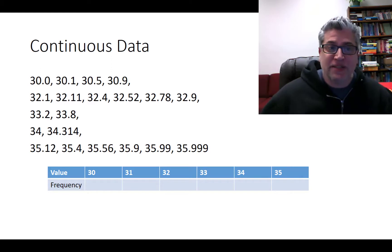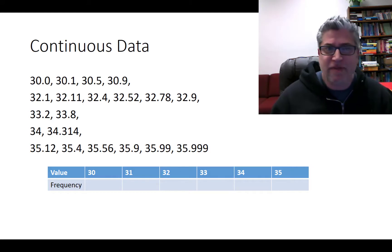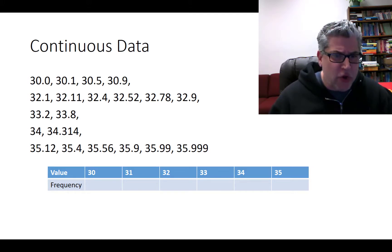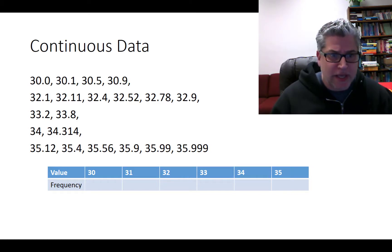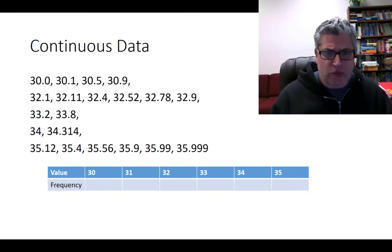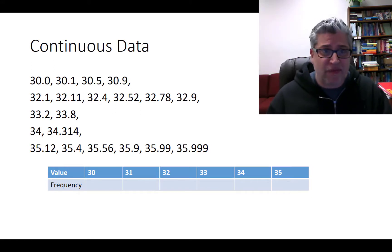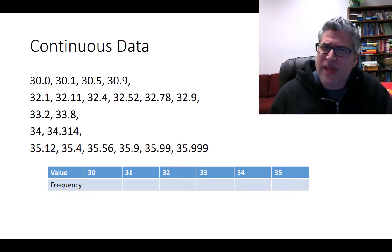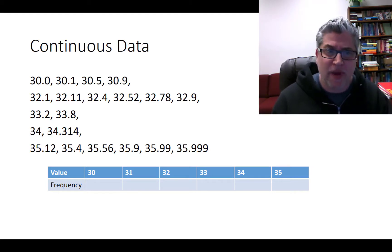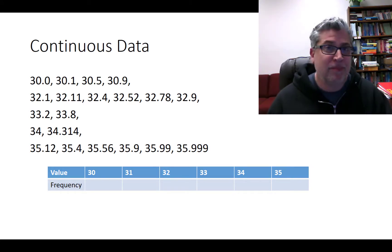Now here we've got some continuous data. The numbers range from 30 to 35.999, with decimals all over the place. In fact, there are no two numbers with the same value — each observation is unique. It's not like there were three 35.99s; there was only one of everything. So we can't really do a bar chart in any meaningful way unless we decide to group our data together. How we group it is up to us.